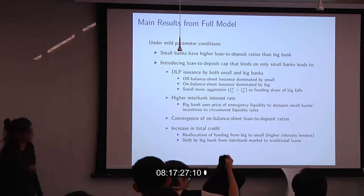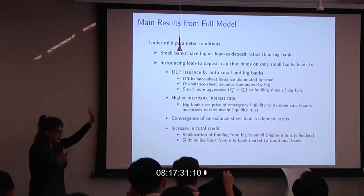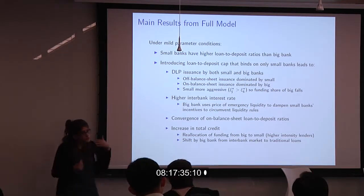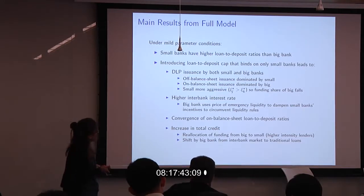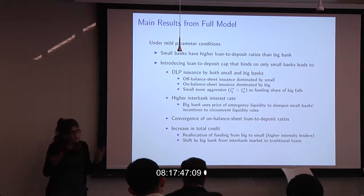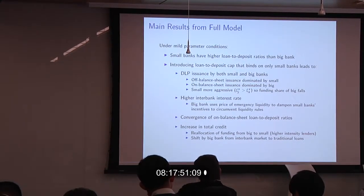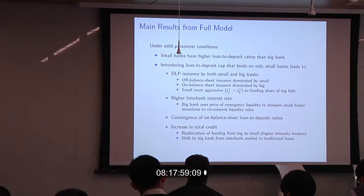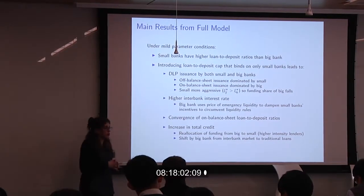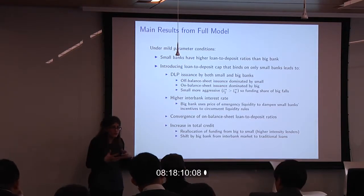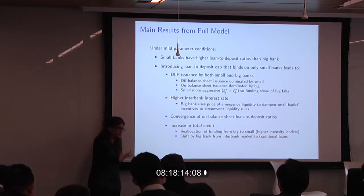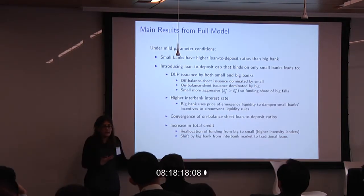In China this prediction holds. If you introduce a loan-to-deposit cap between the big and small banks, it's a differentially binding constraint. You see the emergence of deposit-like products by both small and big banks — small banks go off balance sheet while big banks issue these products on balance sheet. Small banks are more aggressive, offering much higher returns than big banks, which erodes the funding share of the big banks as household savings migrate toward these higher-return products.